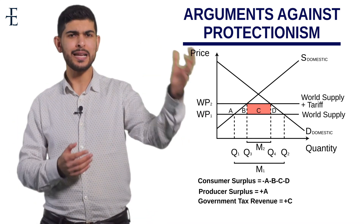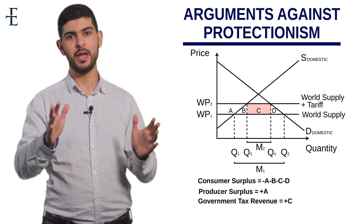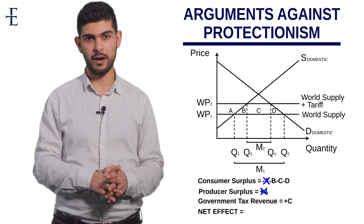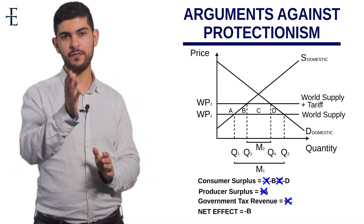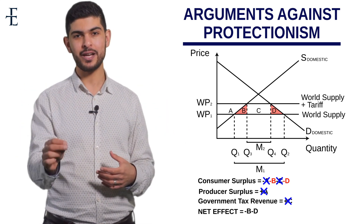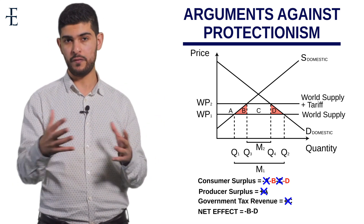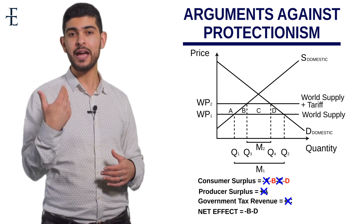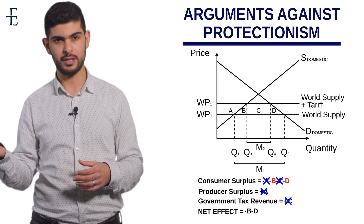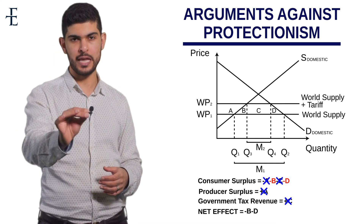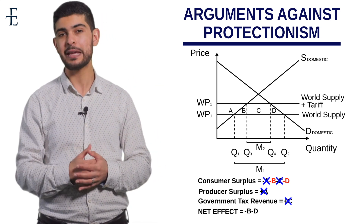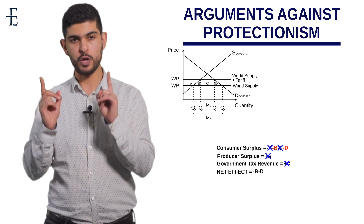To summarize: consumer gets minus A, minus B, minus C, minus D; producer gets plus A; government gets plus C. The two A's cancel out and the two C's cancel out. What you're left with is minus B and minus D — two welfare loss triangles. The net effect of a tariff is negative. The first reason is that consumers face a higher price with less choice. The second is that inefficient domestic firms that wouldn't have survived under free trade are kept in the market, so allocative efficiency goes down and consumer welfare falls.